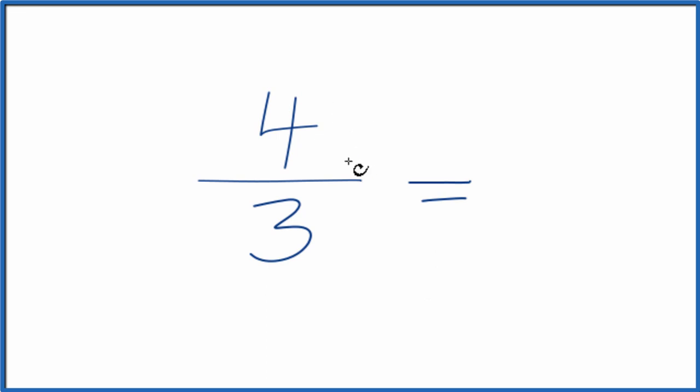Therefore, 4 over 3, the fraction 4 thirds, it's already simplified. It's in lowest terms.